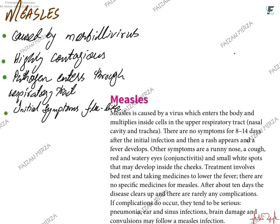Treatment is basically symptomatic — the person is asked to take a lot of bed rest, and medicines are given to lower the fever. There is no specific medication for the treatment of measles. It is a self-limiting disease that heals by itself if you have a good immune system. Most of the time it cures by itself after 10 days. In rare cases, complications such as pneumonia, ear infection, sinus infection, or brain damage can occur, but these are not commonly reported.